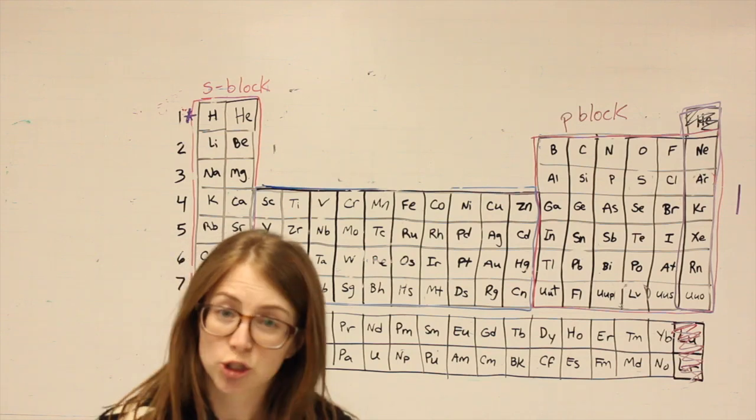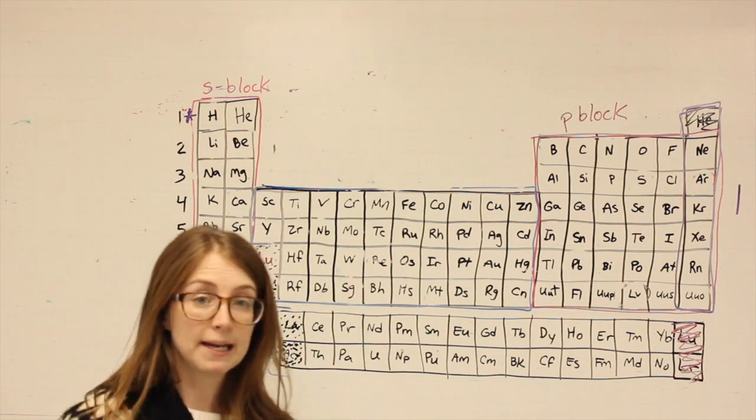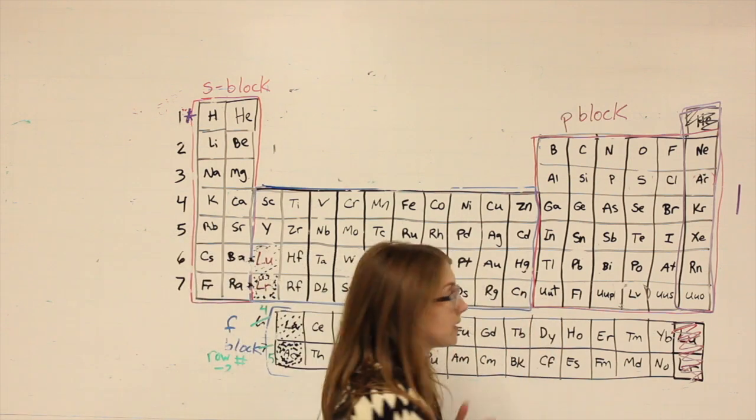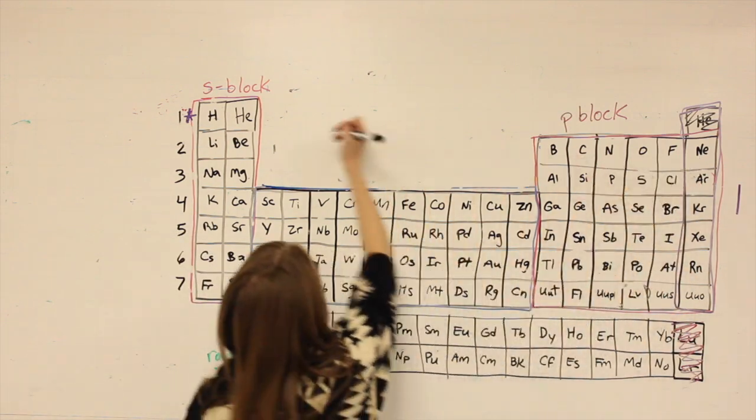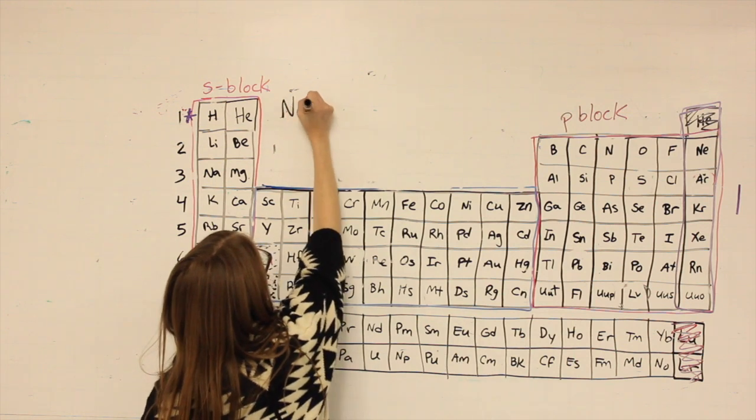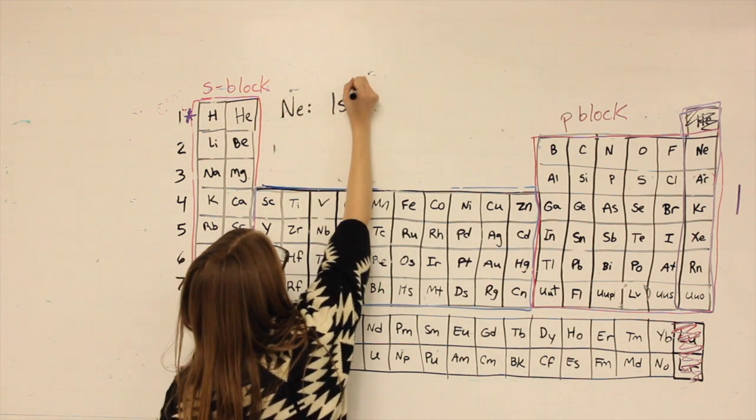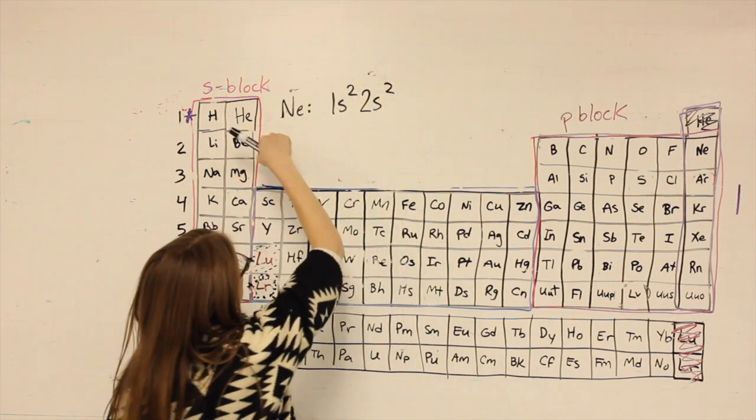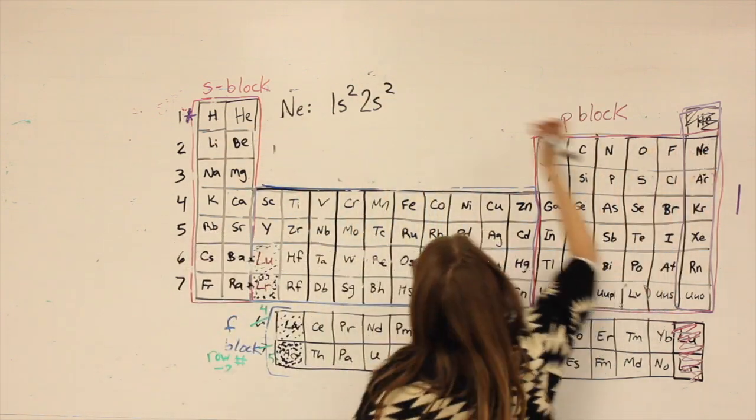When we're looking at what all of this actually means, let's look at neon as an example. I'm going to not use the shortcut because it wouldn't help us, just write neon in brackets. For neon, we have 1s2, 2s2, 2p6.